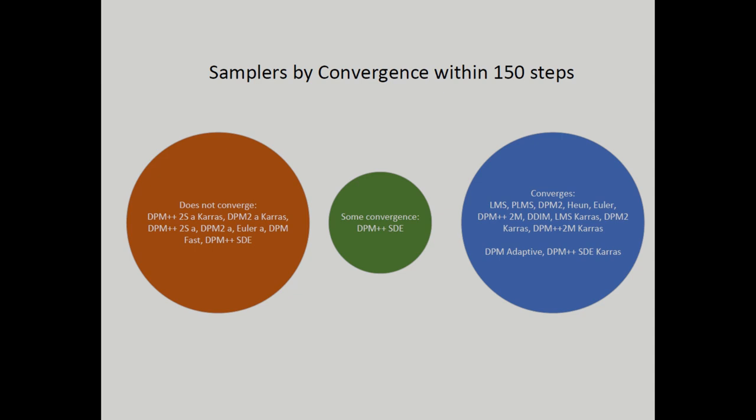In contrast, almost all the samplers from group 2 did not converge. The only exception to this was DPM Adaptive. Additionally, DPM Fast does not converge. I also put DPM++ SDE as some convergence. While it did not converge as strongly as the group 1 and group 1b samplers, it exhibited less variation with more steps compared to the group 2 samplers.